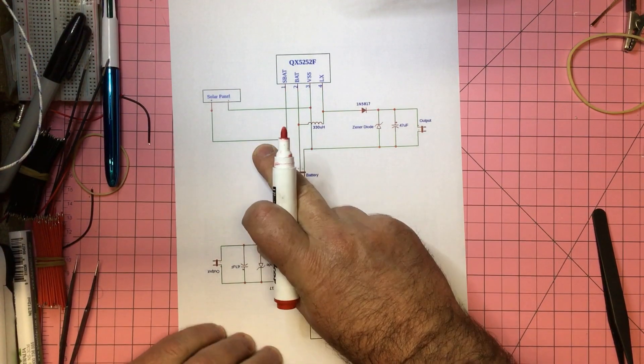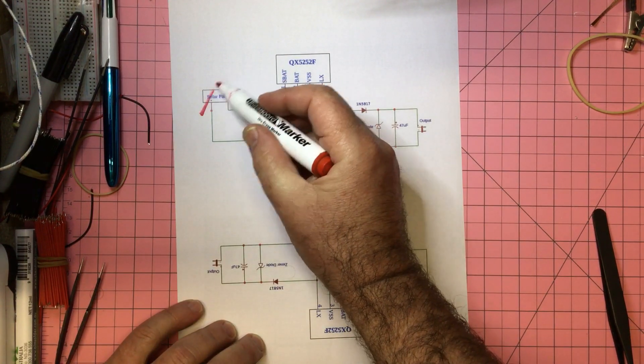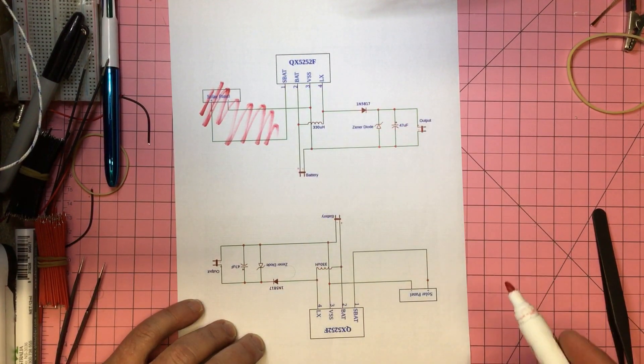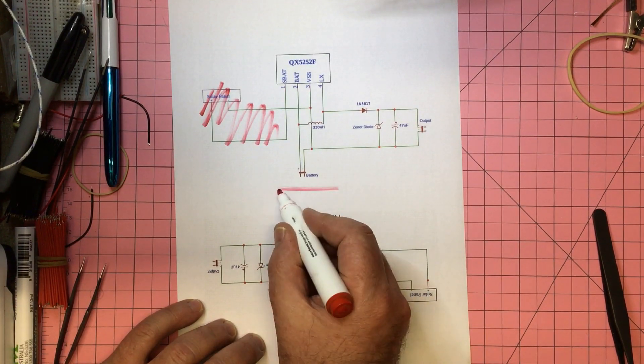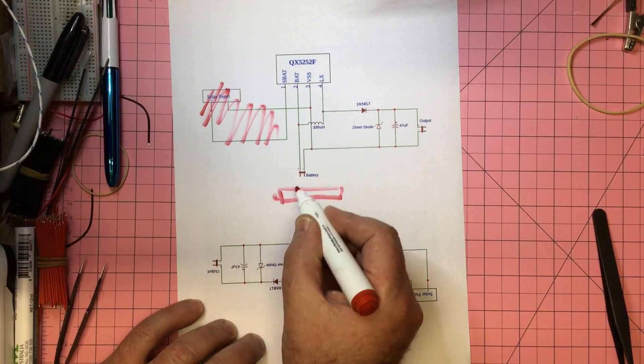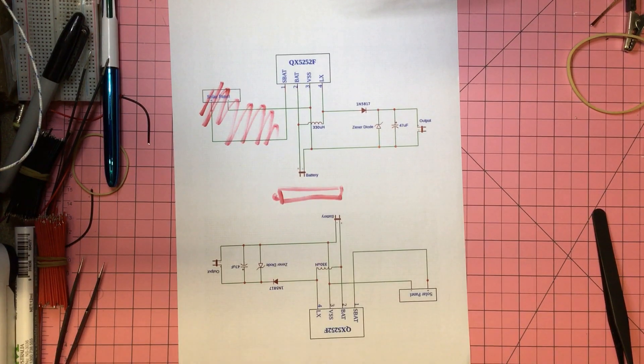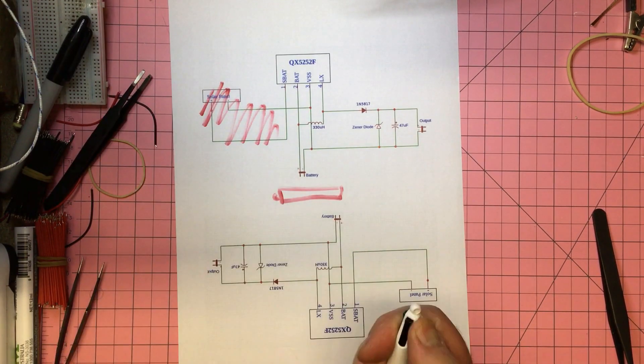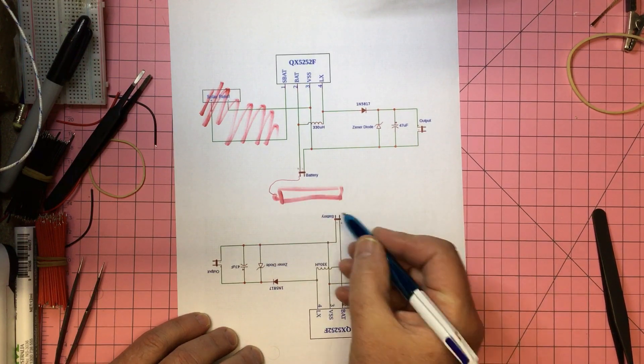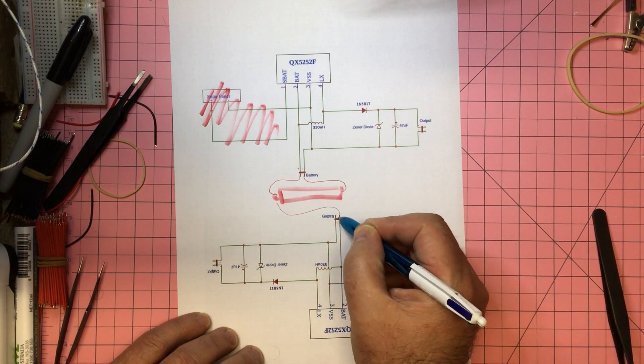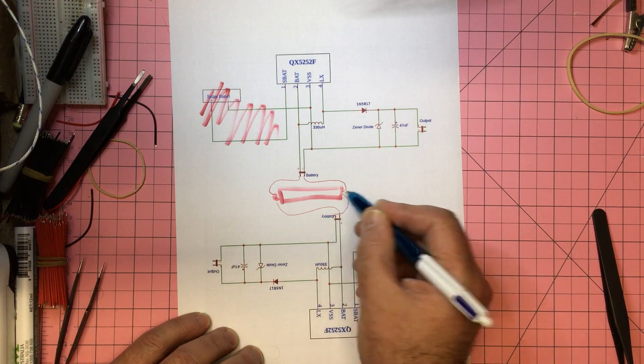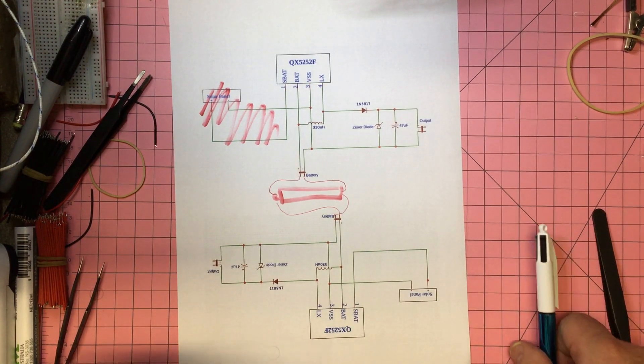This was my idea. Maybe with this QX5252 we get rid of the solar panel, so all we have is battery in. Let's draw the battery here, so we've got our battery, positive positive negative negative.